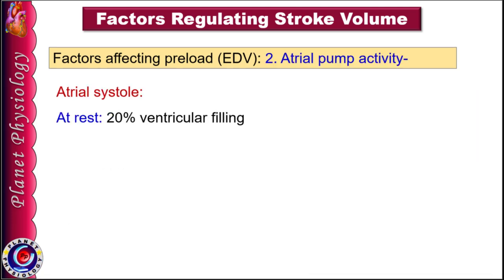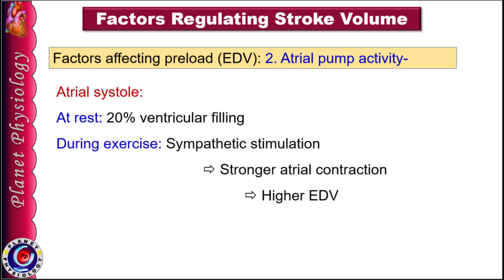The second factor regulating preload is atrial pump activity. As studied in the cardiac cycle, atrial contraction causes about 20% filling of the ventricles. Any factor which increases atrial pump activity increases ventricular filling and end-diastolic volume. For example, during exercise, sympathetic stimulation to the atrial muscles increases their force of contraction and hence end-diastolic volume.